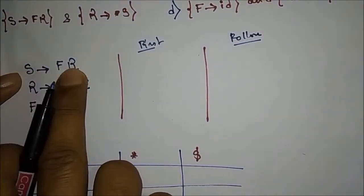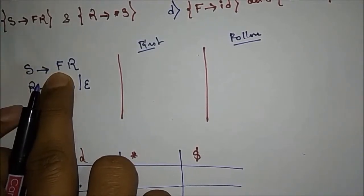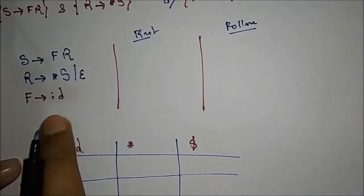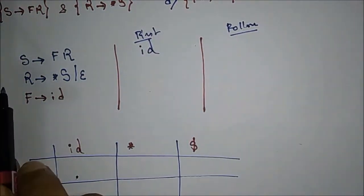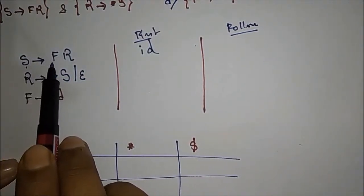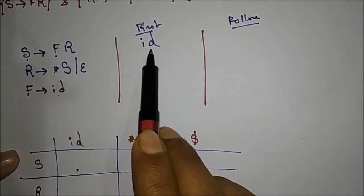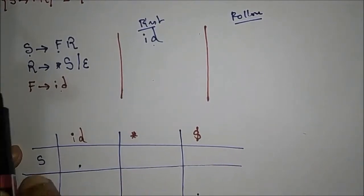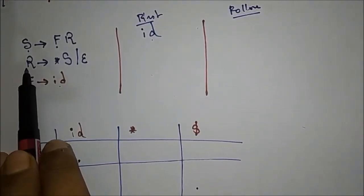For the production S → F R, what is the FIRST of S? The FIRST of S is the FIRST of F. The FIRST of F is ID, so the FIRST of S is ID. ID is a terminal and the others are variables. So FIRST(S) = {ID}.